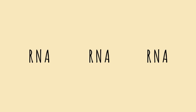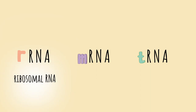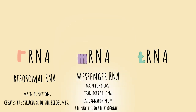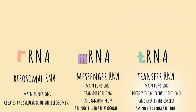You will see three different types of RNA in protein synthesis. rRNA is ribosomal RNA, and its main function is to create the structure of the ribosome. mRNA is the messenger RNA, and its main job is to transport the DNA information or message from inside the nucleus to the ribosome. tRNA is the transfer RNA, and its main function is to decode the nucleotide sequence and create the appropriate amino acid for the code — basically, it makes amino acids using the codes on mRNA.